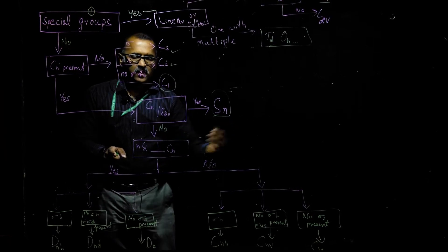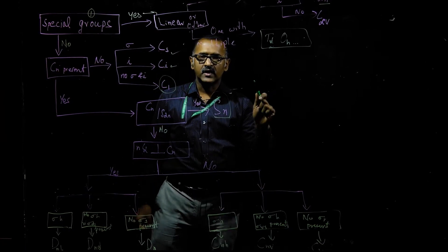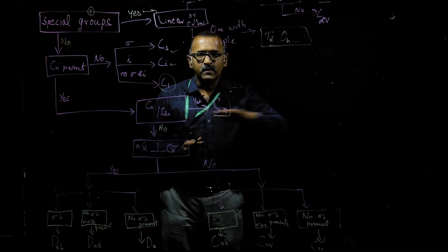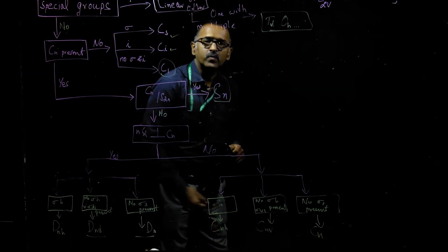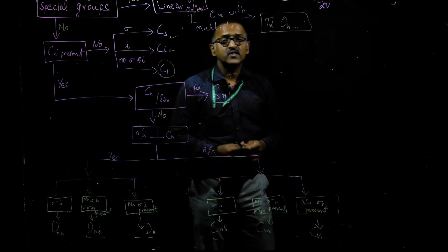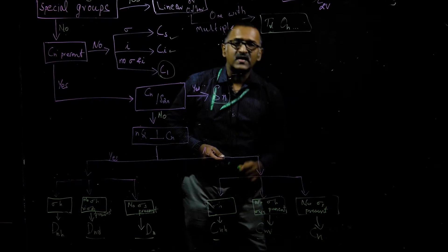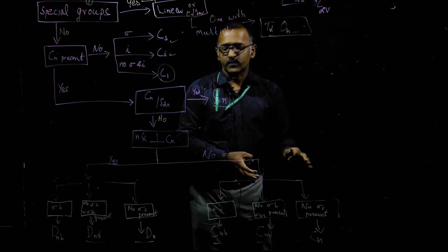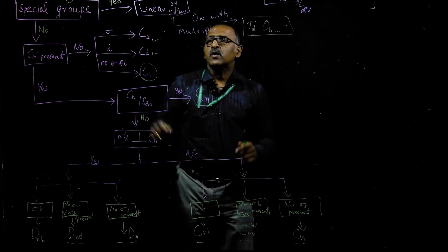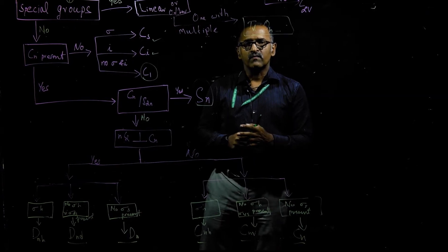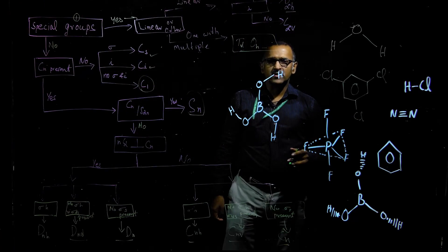Going to the other branch where nC2 perpendicular to Cn are not present, only the Cn axis exists. We then check whether the molecule has a sigma H plane. If it is planar, the point group is CnH. If there is no sigma H but sigma Vs (vertical planes) are present, the point group is CnV. If no sigma planes are present at all, the point group is Cn.